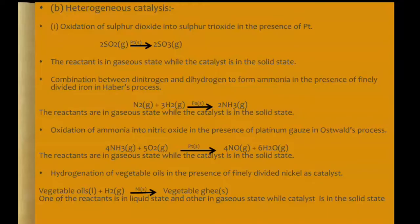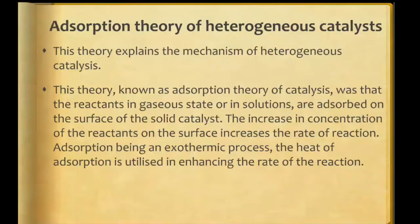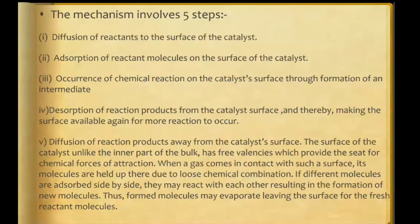Next is the adsorption theory of heterogeneous catalysis, which can be explained in five steps. Number one: diffusion of the reactants to the surface of the catalyst. Number two: adsorption. Number three: chemical reaction at the surface of the catalyst. Number four: desorption of the product formed. And number five: diffusion of the reaction products away from the catalyst.